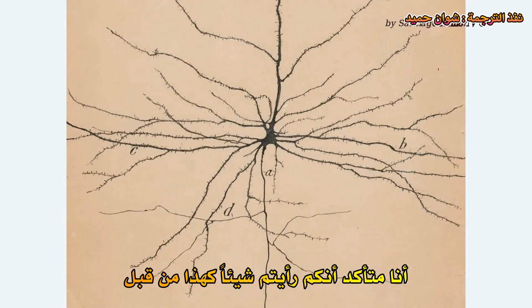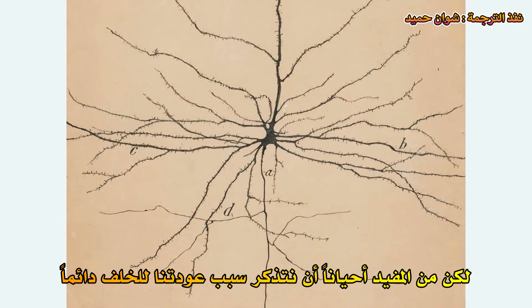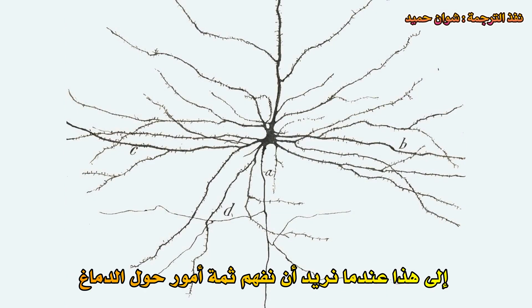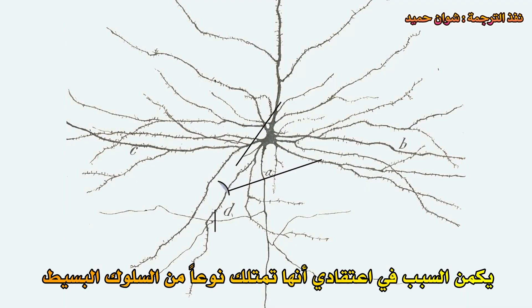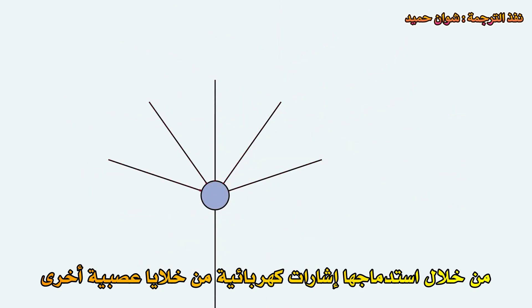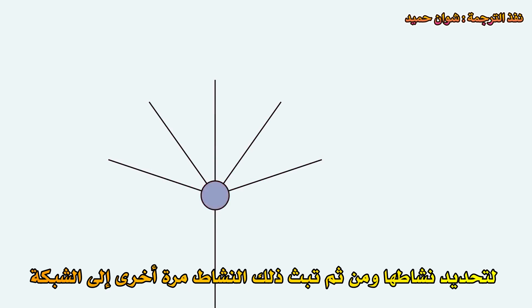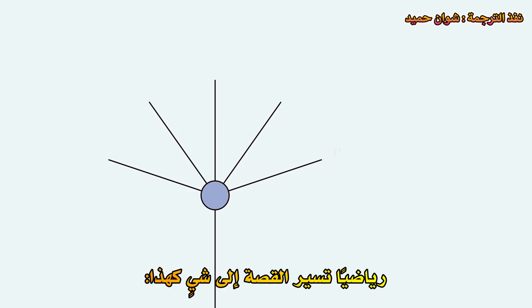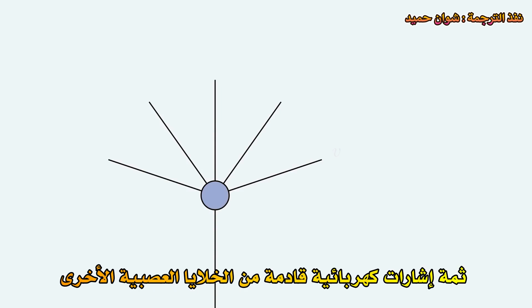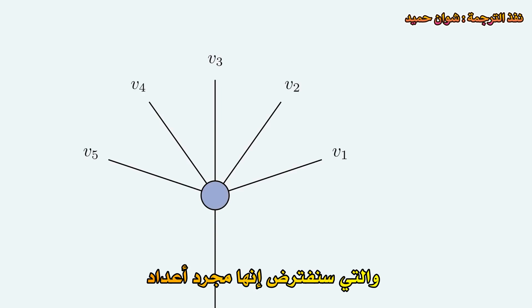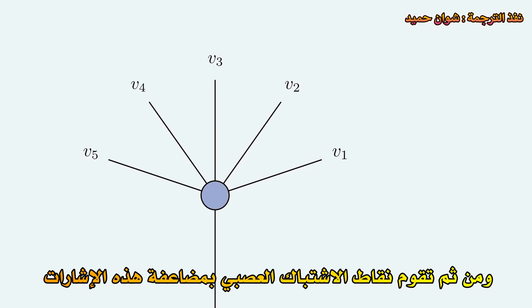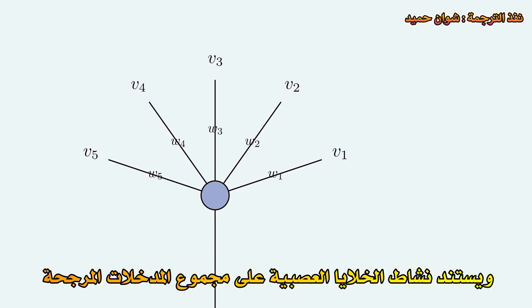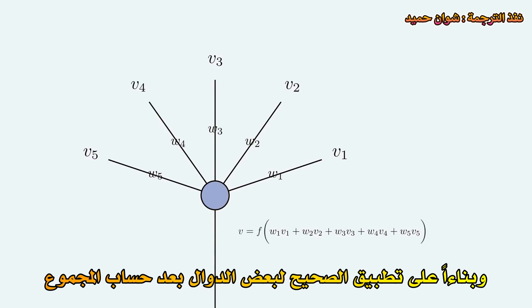This is a neuron — I'm almost certain you've seen something like this before. It has a rather simple behavior: it integrates electrical signals from other neurons to determine its own activity, and then it broadcasts that activity back to the network. Mathematically, the story goes something like this: there are electrical signals coming in from other neurons, which we will say are just some numbers. Then the synapses act as multipliers on these signals — another set of numbers. And the activity of the neuron is based on the sum of the weighted inputs, after applying some function F. And that's it.